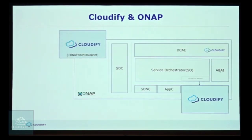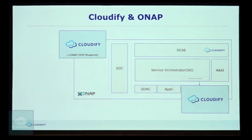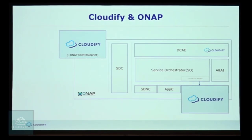Another way to look at it: Cloudify on the left side installs ONAP on top of a Kubernetes cluster. At the top, it's part of DCAE, and here you can look at it as part of the controllers - SDNC, AppC. If you want to execute a complex Tosca topology, a distributed topology, you use Cloudify for that. Already there are several telcos that use ONAP together with Cloudify.